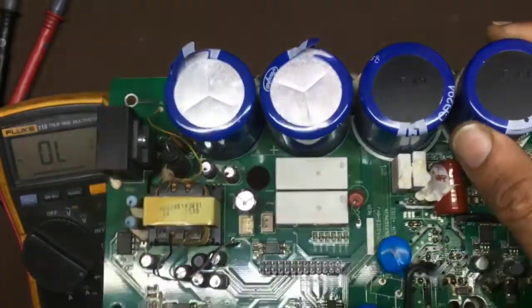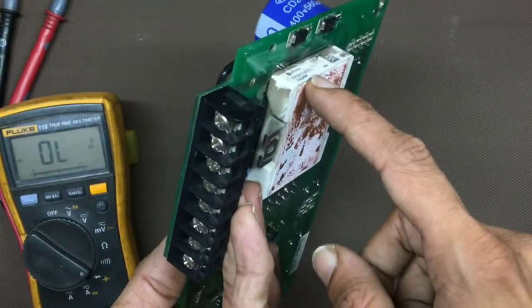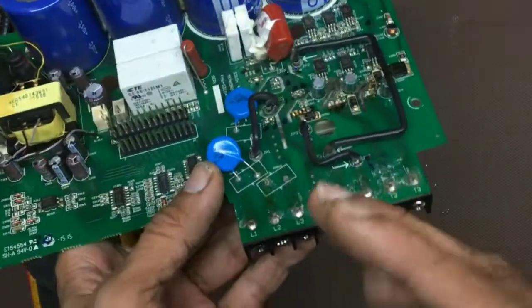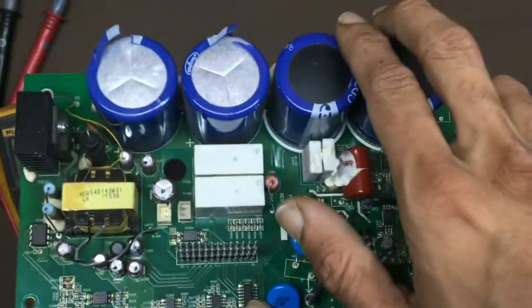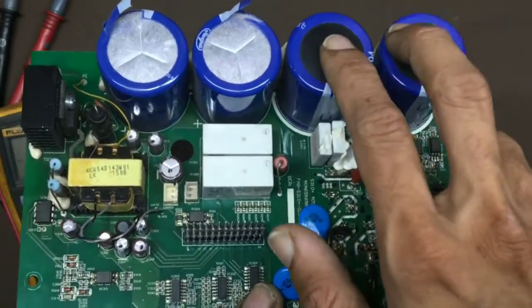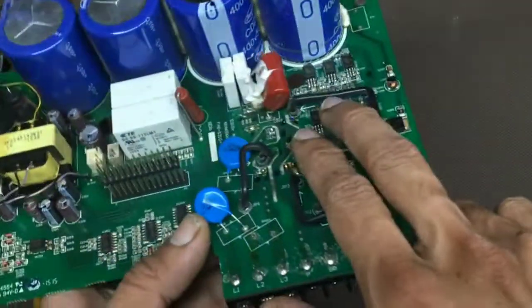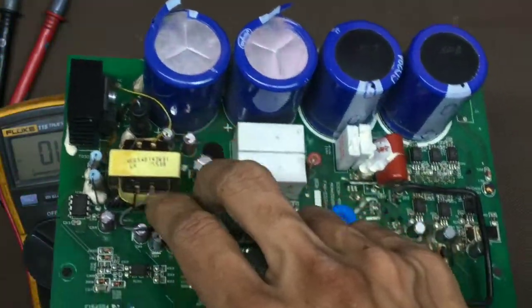The rectifier. This is the IGBT and rectifier built-in module, single module. So, the AC goes to the rectifier, then capacitor DC filters. Then, the IGBT inverts it to AC again and the UVW. And the SMPS section is switched on via the DC supply.